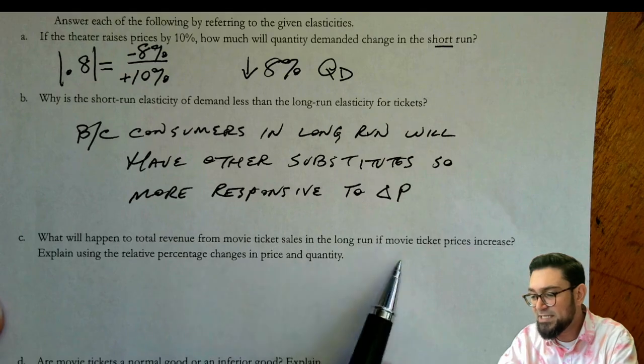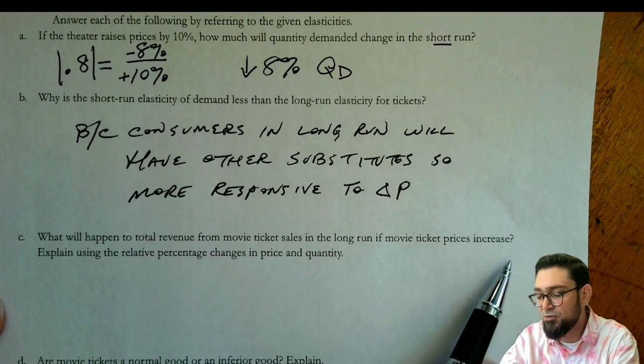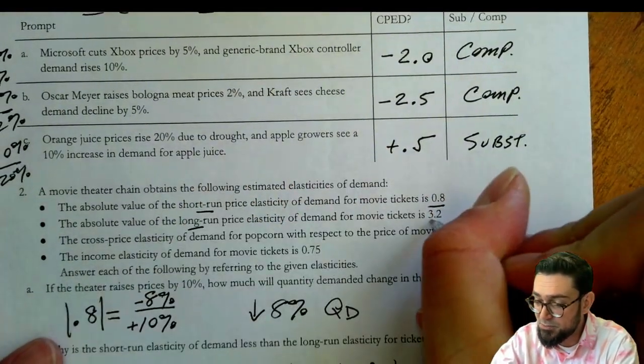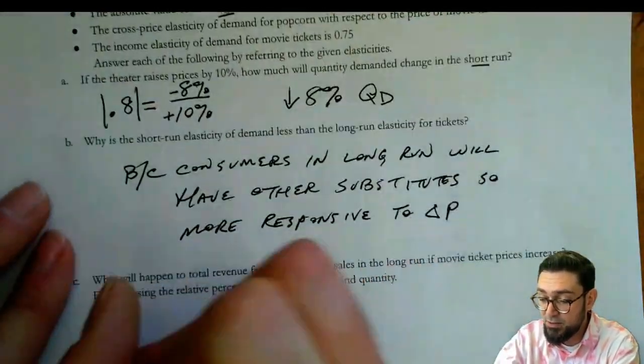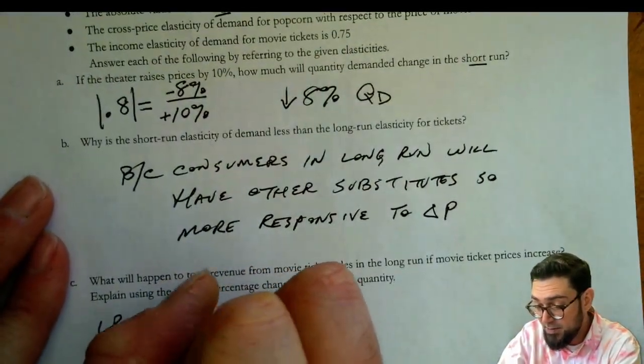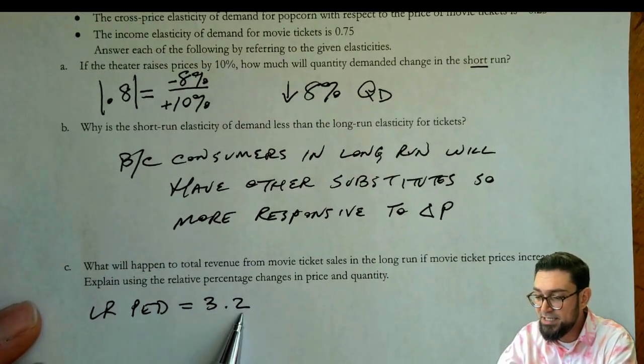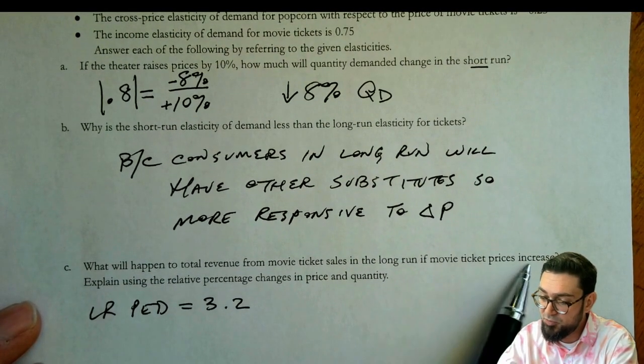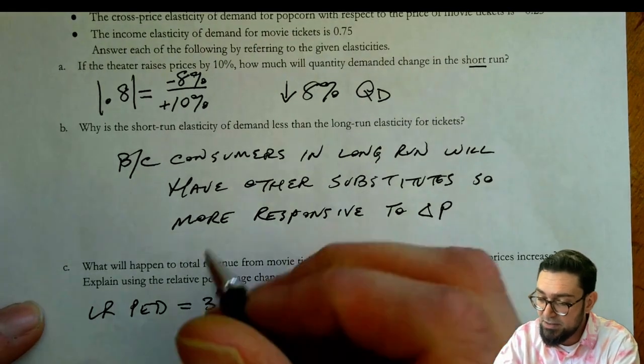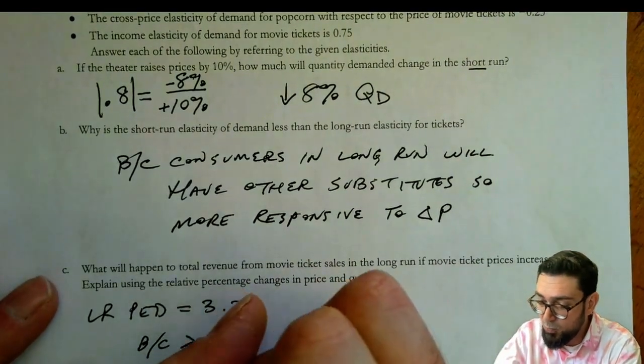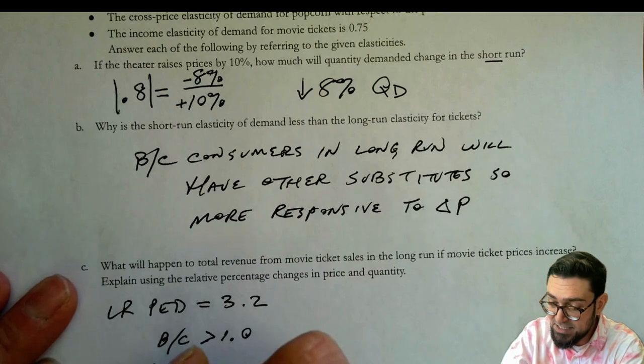Part C, what will happen to total revenue for movie tickets in the long run if movie ticket prices increase? So we go back up here. The absolute value in the long run is 3.2. So the long run PED equals 3.2. And so if we have the long run PED is 3.2, if movie ticket prices increase, then because it's greater than 1, I know that it's elastic.